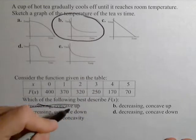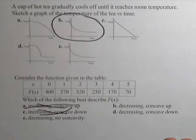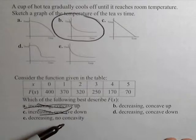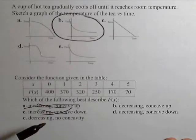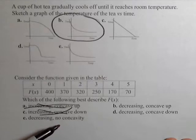So A is out, B is out. We know it's decreasing, so the only other thing we need to discern is the concavity. If it's concave up, there's an increasing rate of change. If it's concave down, there's a decreasing rate of change. No concavity would imply it's linear.